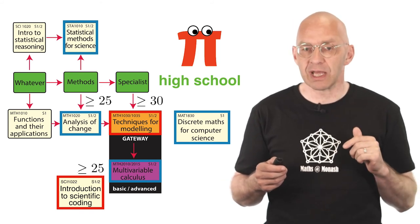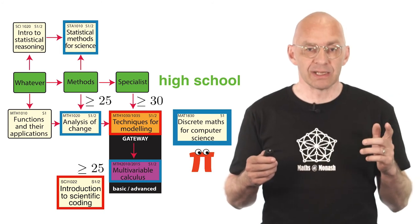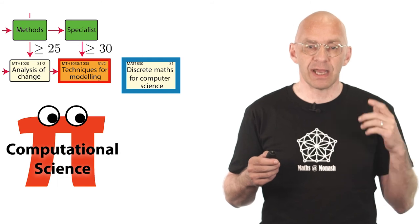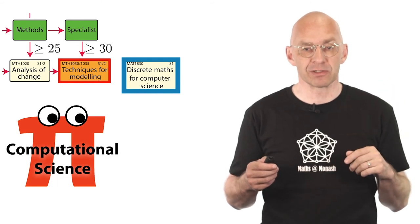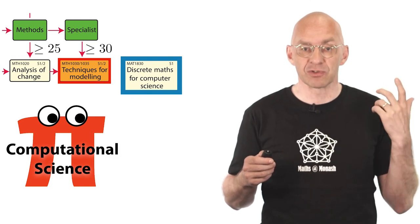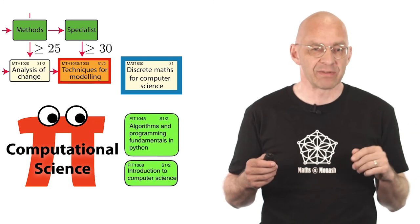Did you spot that extra unit MAT1830? If you are after a major in computational science both this discrete maths unit for computer science and the orange unit are compulsory. As well as a budding computer scientist in your first year at uni you have to enroll in these IT units here or the advanced versions.